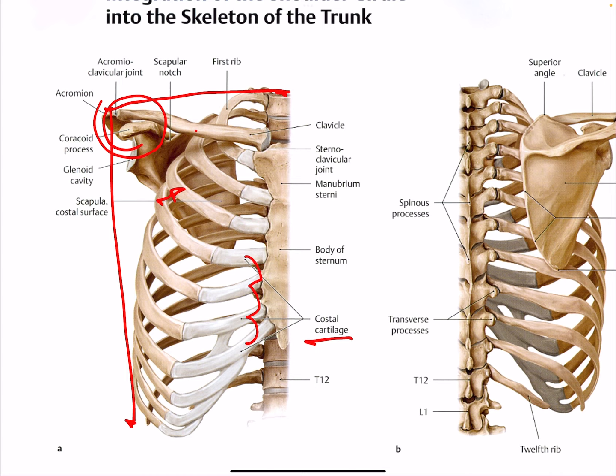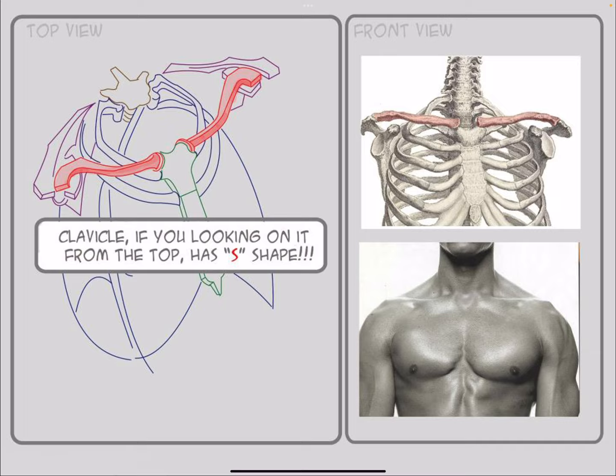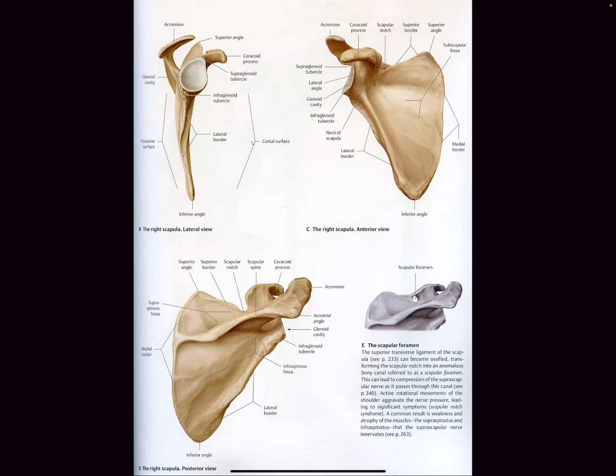The ribs are made to hold these really important anatomical structures in place — your liver, heart, and lungs — and keep them safe. But the space is relatively open so that we can have flexibility to breathe, your heart can pump blood, and all these anatomical landmarks can function while under the comfort of their little home. The scapula is the only floating bone in your body.